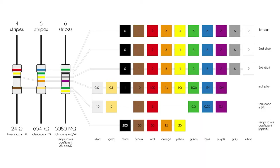Now let's talk about color bands on resistors and how to read them. Note that the colors in the table do not occur randomly — there is a certain order, almost like in a rainbow, from gray to silver. Most often we see resistors with four-band designations. The first two bands define a number, the next band is a multiplier telling us how many zeros we need to add to the number, and the last band tells us about the element's tolerance.